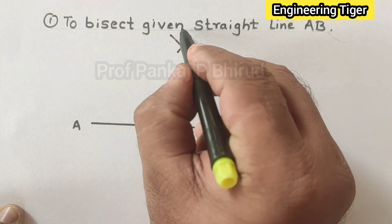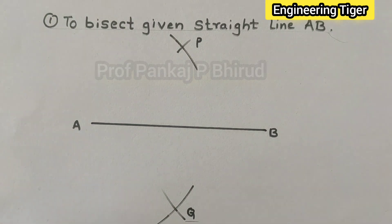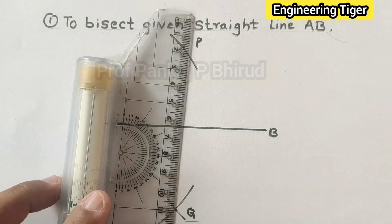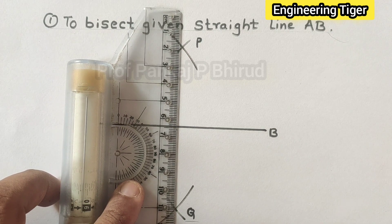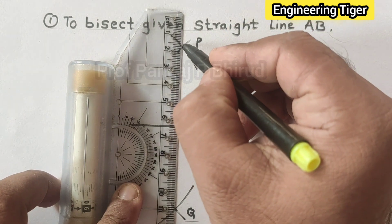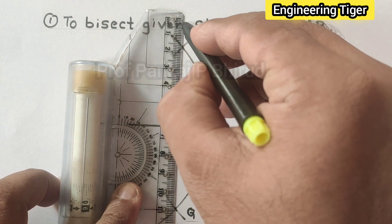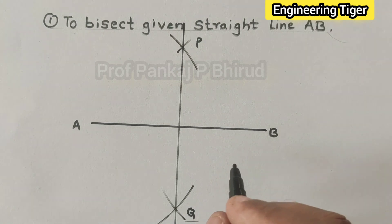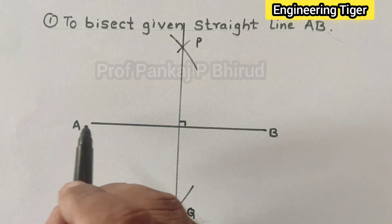We will get intersection points — let us call this intersection P and this intersection Q. Now we have two intersection points. Join them. So this AB line will be exactly bisected into two parts, and PQ makes 90 degrees with AB.